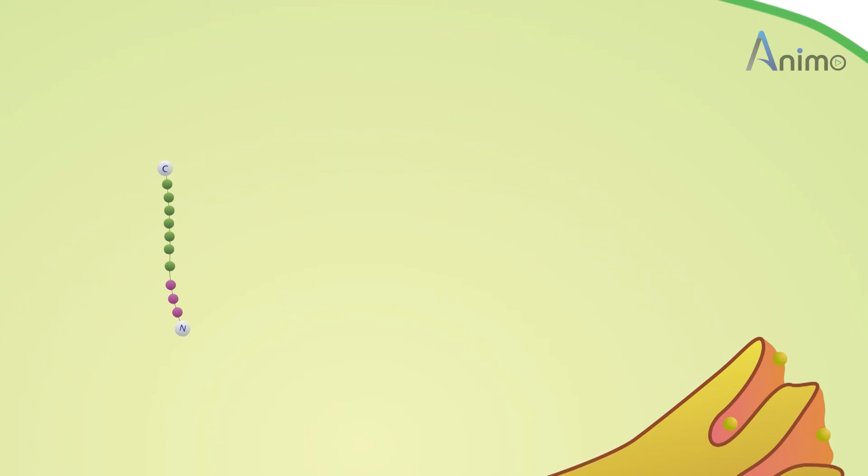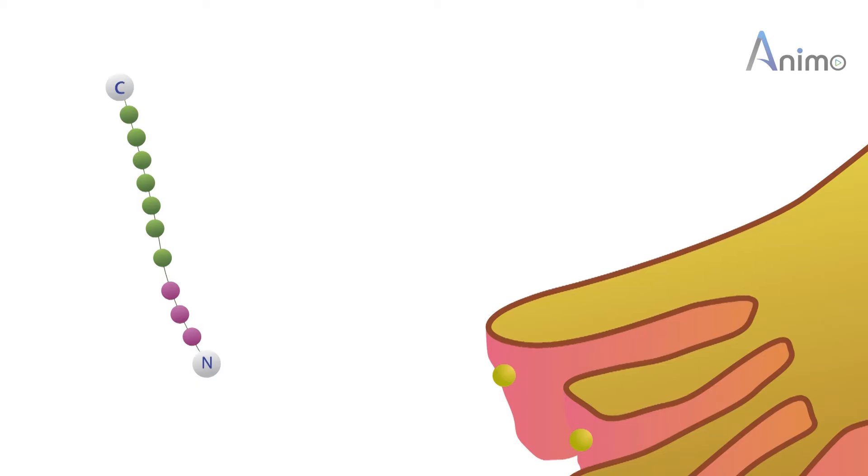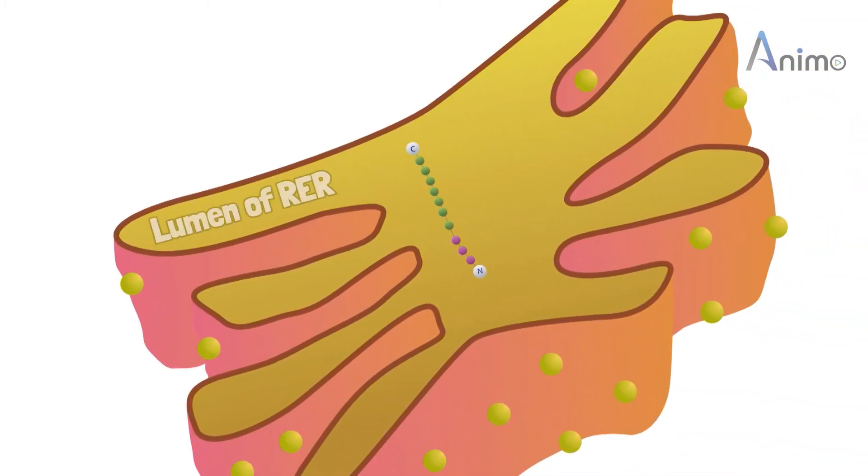The pre-pro-alpha chain undergoes different modifications while it is still being produced. Why are these modifications necessary? I will explain that soon. This pre-pro-alpha chain enters into the lumen of the rough endoplasmic reticulum.